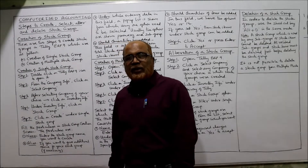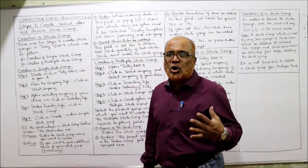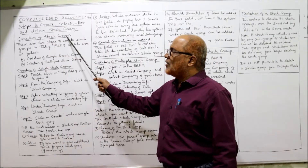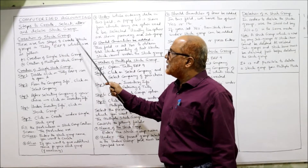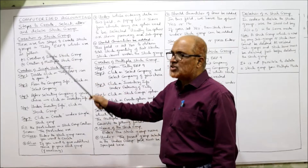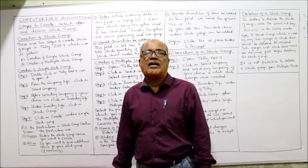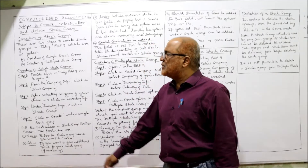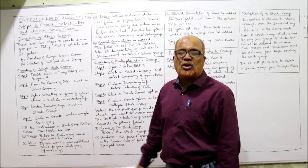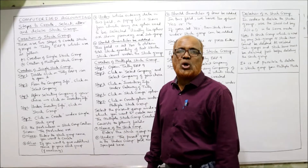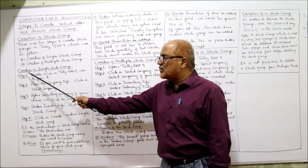Now I'm going to explain what steps are required to create a stock group. There are two methods to create a stock group in Tally ERP 9. The first method is creation of a single stock group, and the second is creation of multiple stock groups. We'll discuss both of these methods.